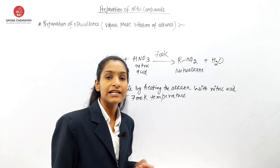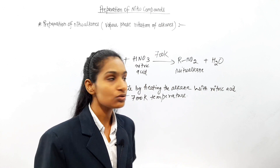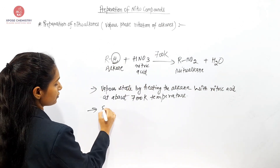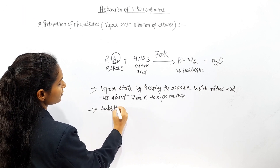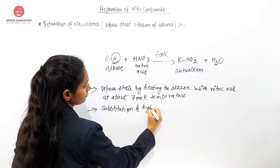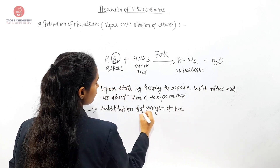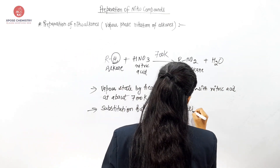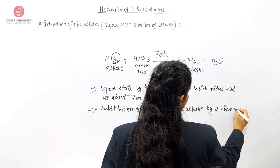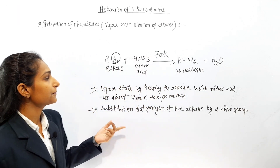In this reaction, what happens to the hydrogen of the alkane? Substitution — substitution of a hydrogen of the alkane by a nitro group. So this is the substitution of a hydrogen of the alkane by a nitro group.